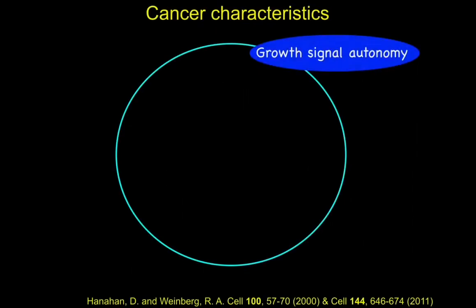Some 20 years ago, two luminaries in the field — Doug Hanahan and Bob Weinberg — came up with a set of characteristics they ascribed to the cancer cell. Perhaps the most surprising thing was that it had taken the whole history of cancer research to get to the point where anyone felt brave enough to make such a characterisation. About 10 years after that, they revised their features by adding two more to reflect advances that had taken place in that interval.